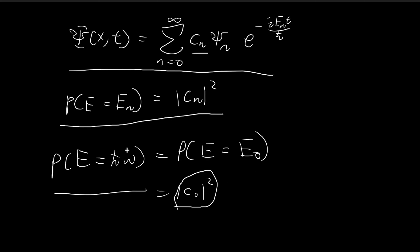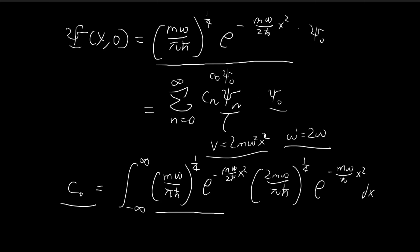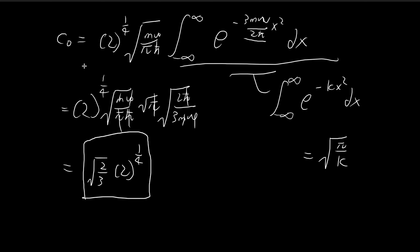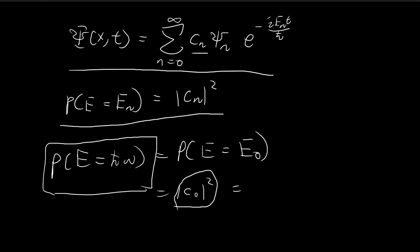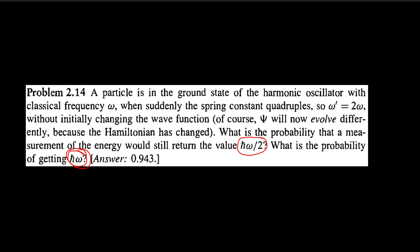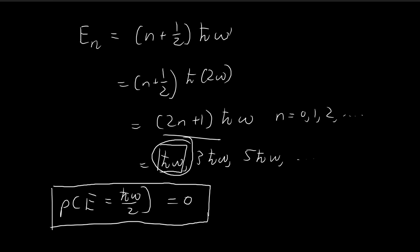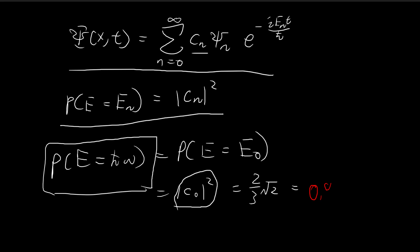Going back to the original problem, the probability we want is |c₀|². Squaring c₀ = √(2/3) · 2^(1/4) gives (2/3)·√2. This is equal to the numerical answer that Griffiths provides: approximately 0.943. So the probability of measuring energy ℏω under the new potential is 0.943.